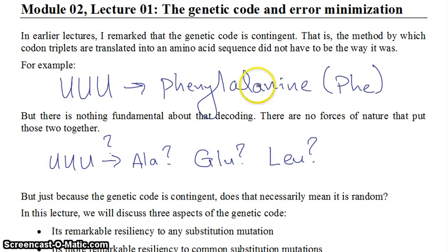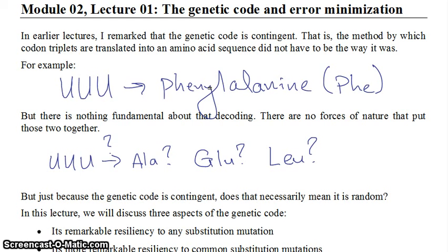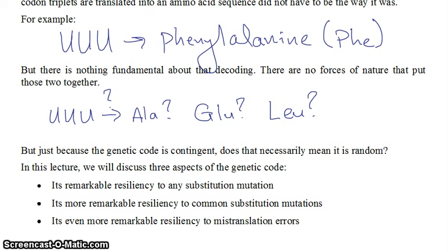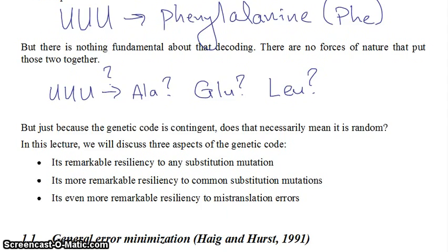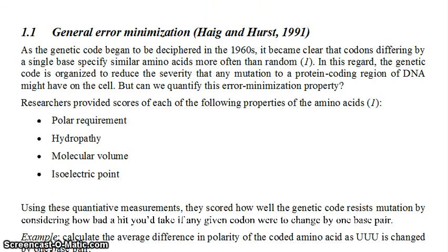Just because the genetic code is contingent — in other words, there had to be something put in place like the tRNA and the aminoacyl transferases — does that necessarily mean it's random? In this lecture, we are going to discuss three aspects of the genetic code. First, we're going to discuss its remarkable resiliency to any substitution mutation. Second, its even more remarkable resiliency to the most common kinds of substitution mutations. And third, its even more remarkable resiliency to mistranslation errors. So let's dive into it. In the first part, we're going to talk about a paper by Haig and Hearst from 1991, which focused on general error minimization of the genetic code.